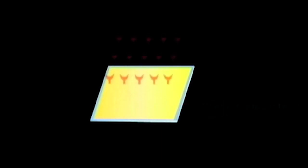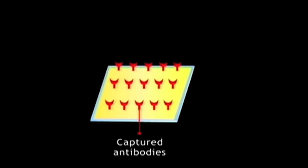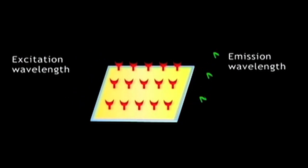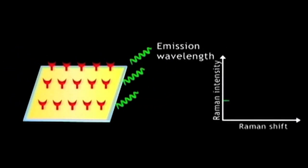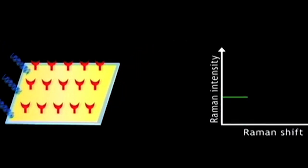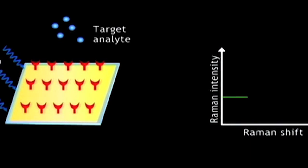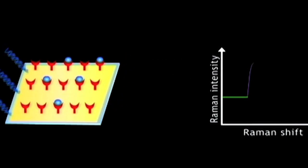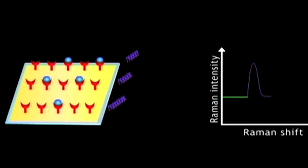Let us now discuss the principle of gold nanoparticles and nanocages in this interactive animation. The gold nanoparticle surface is functionalized with antibodies, which will bind to the analyte of interest. Any target binding is depicted by a change in the Raman intensity of the emission spectra. As seen on the right-hand side, the Raman shift versus Raman intensity is plotted. After the gold nanoparticles bind with the antibodies, a change in Raman intensity is observed as shown in the plot.